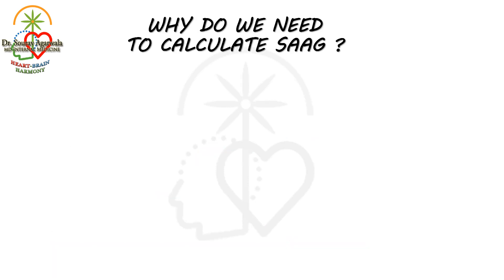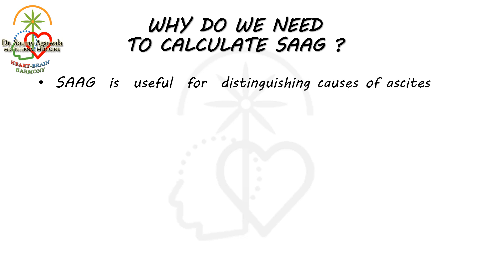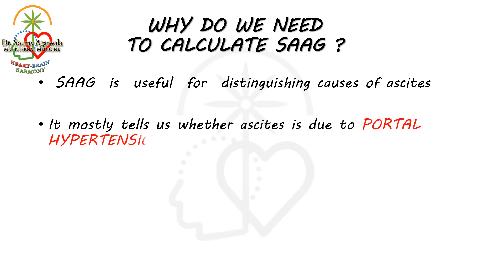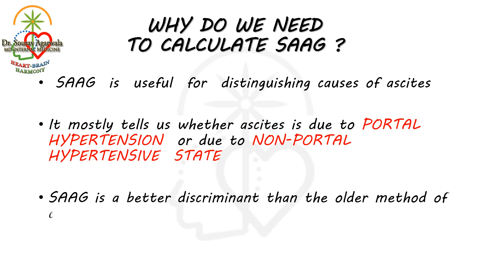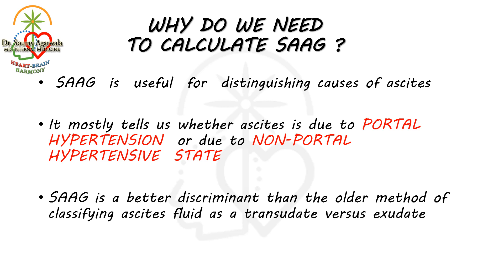You must be wondering why so much fuss about SAAG and why do we need to calculate it in the first place. SAAG is very useful for narrowing down the causes of ascites. It mostly tells us whether the ascites is due to portal hypertension or a non-portal hypertension state, with very high accuracy. SAAG is actually a better discriminant than the older method of classifying ascites fluid as transudate or exudate.